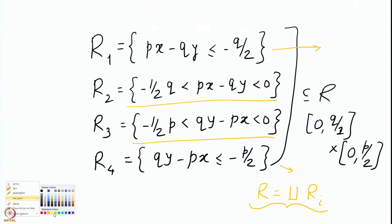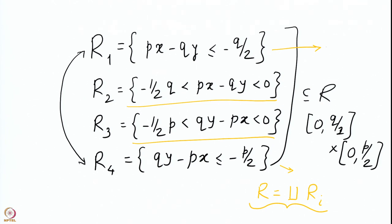We also saw in the previous lecture that the number of lattice points in R1 equals the number of lattice points in R4, so there is a bijection between those two sets. Therefore, when counting the lattice points in R2 and R3, we need to add twice the number of lattice points in R1. Since R1 and R4 contribute an even number, when you take the power of minus 1 it does not change whether you keep only R2 and R3 or the whole rectangle R.